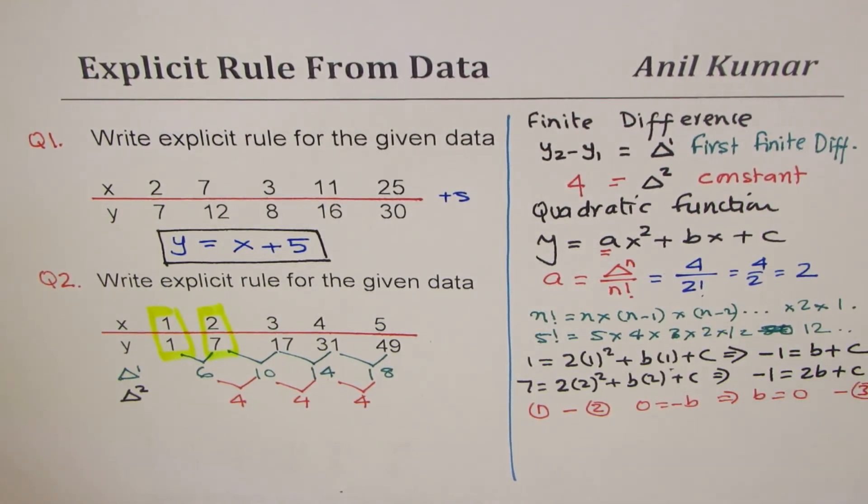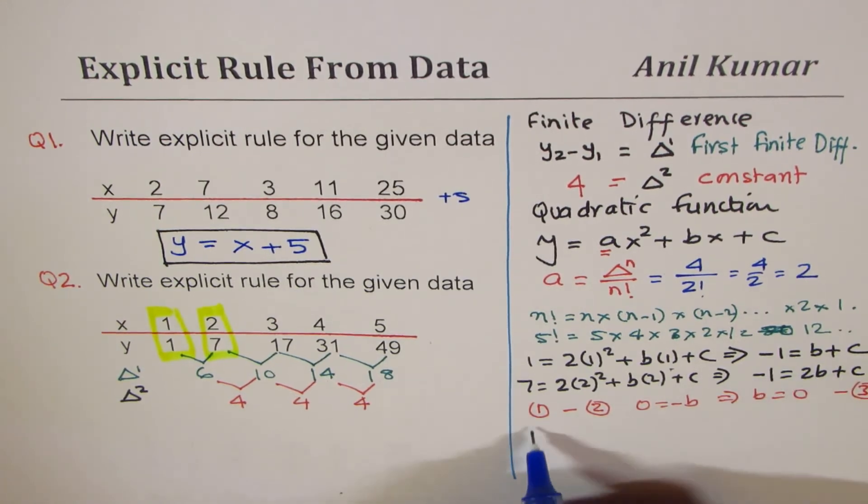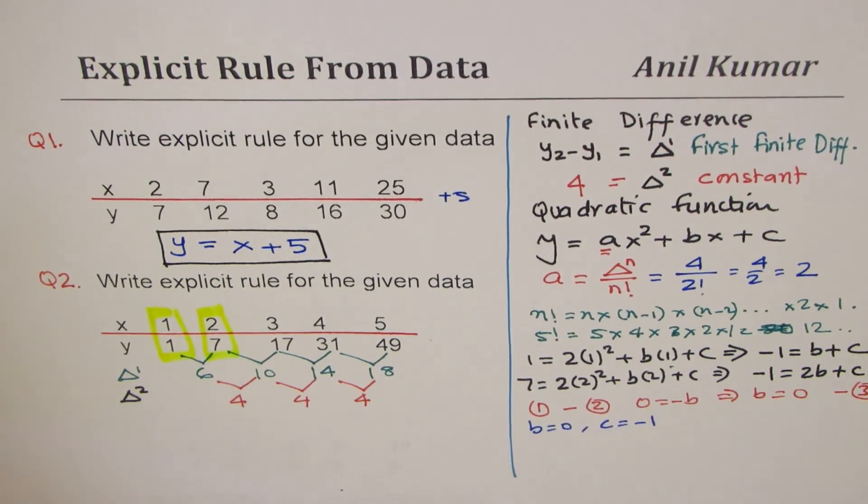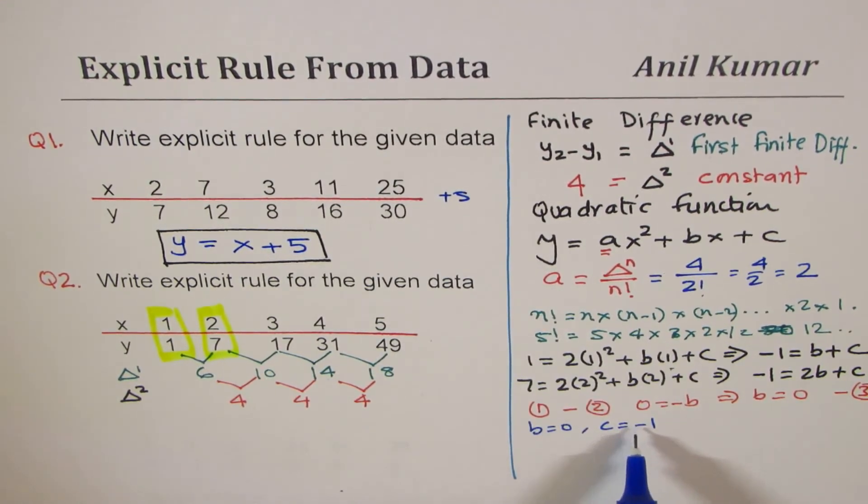So we know the value of b which is 0. Substituting b as 0 in any one of these equations, let it be 1, we can find what c is. If b is 0, then c equals minus 1.